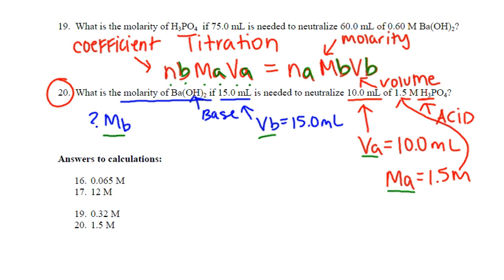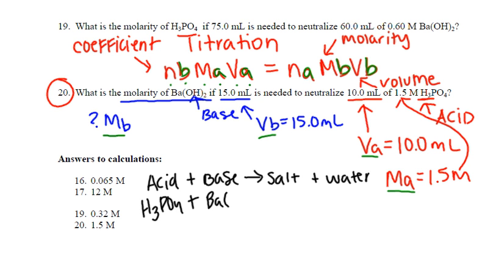Now remember, in a neutralization equation, you've got your acid plus your base, and when you mix those together, you're going to get salt and water. So let's try that. My acid is phosphoric acid, H3PO4. My base is barium hydroxide, Ba(OH)2.